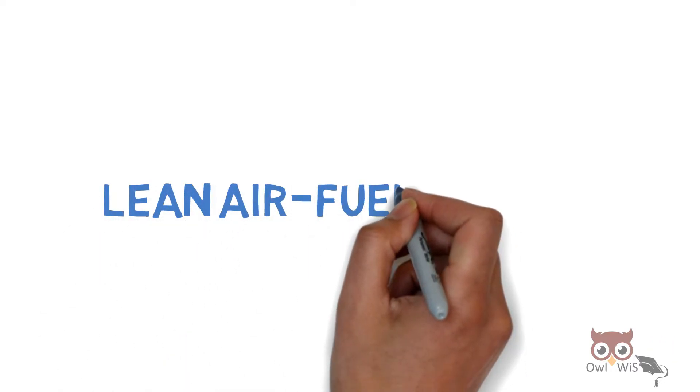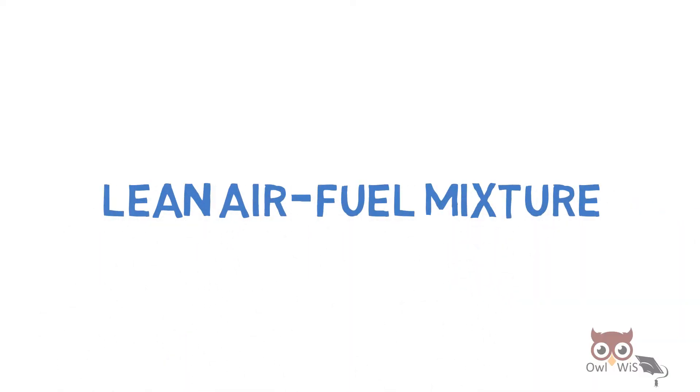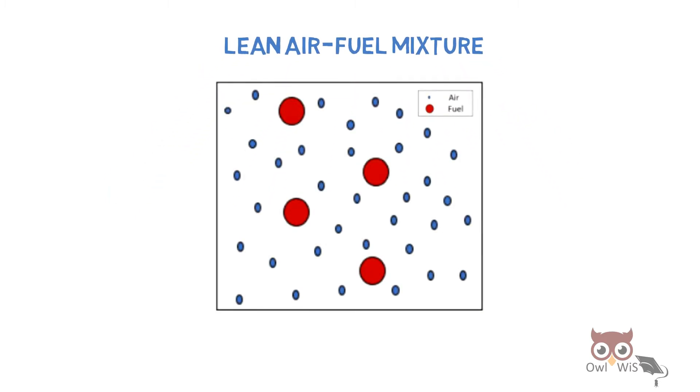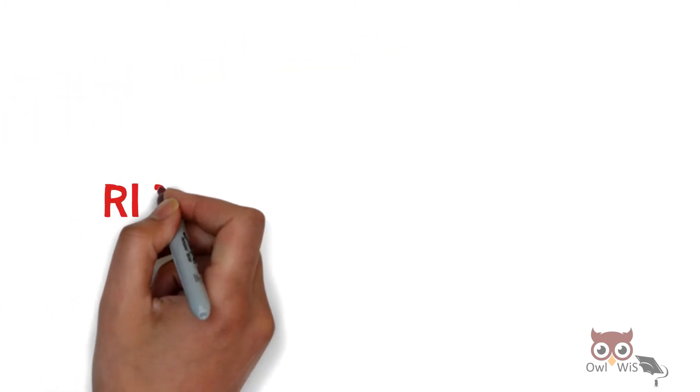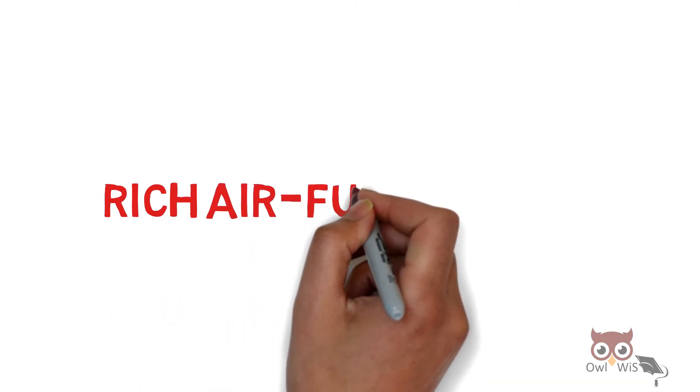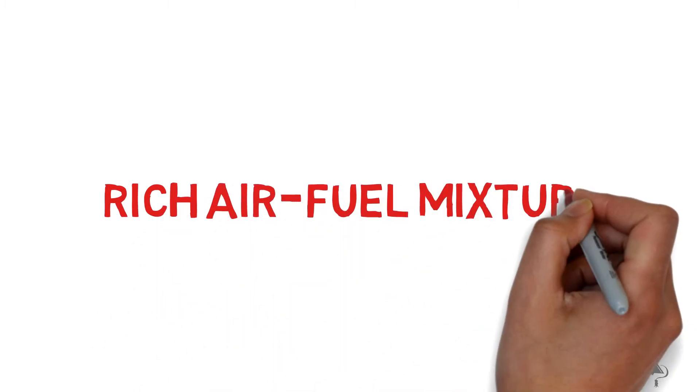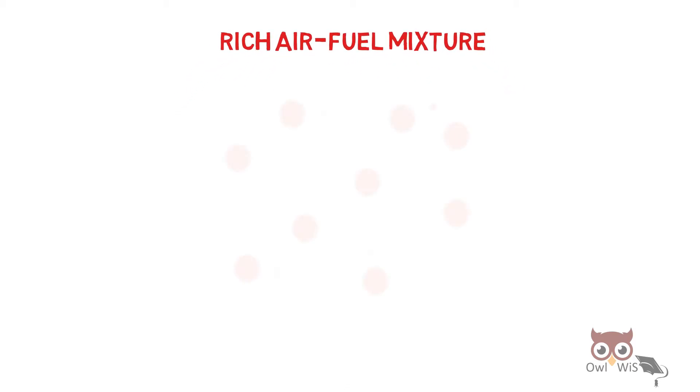Lean air-fuel mixture is one where the air is more and there is less fuel. Similarly, there is rich air-fuel mixture. Here, the fuel is more and there is less air.